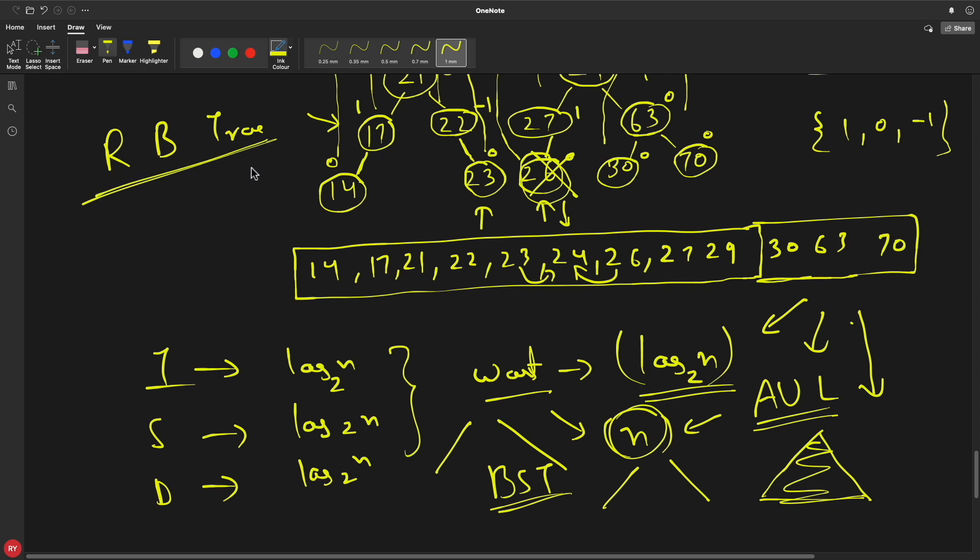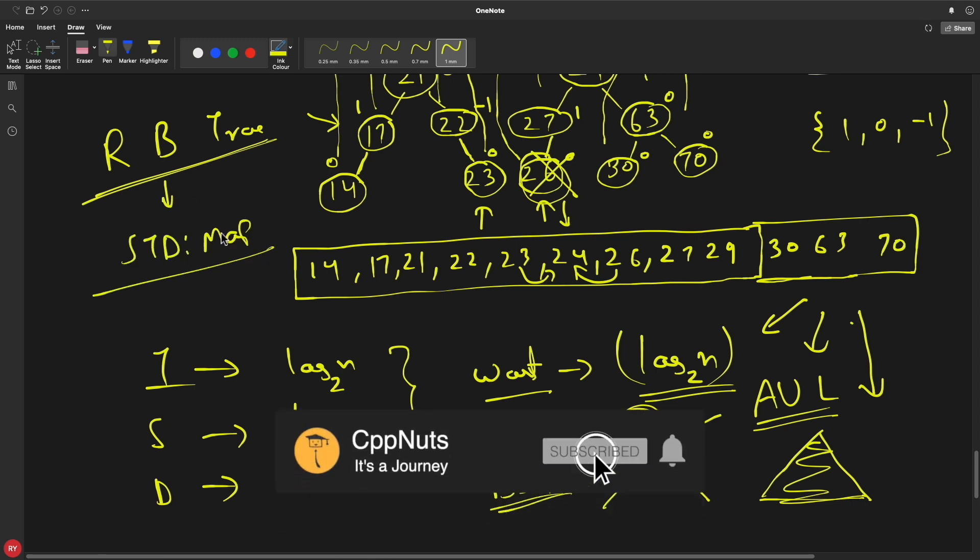And I'll have a separate video why red-black tree is good or better than AVL tree, because it is a better self-balancing binary search tree and people say that this is what is used in our std map, what we use in our C++. So I'm done here. Thanks for watching, guys. Love you. Take care. Bye.